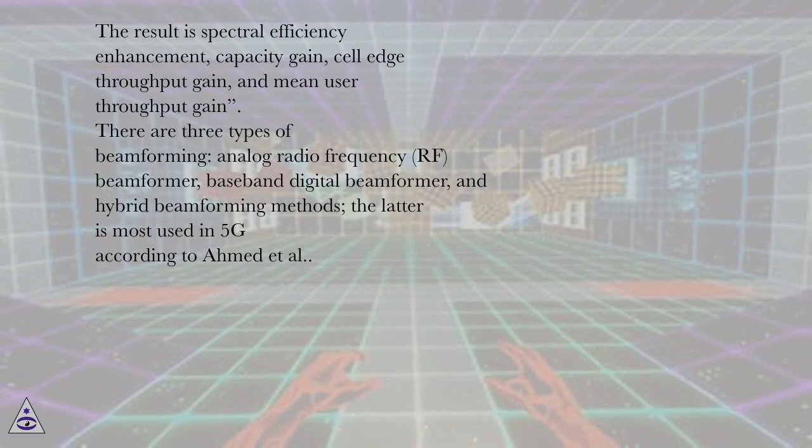There are three types of beamforming: analog radio frequency (RF) beamformer, baseband digital beamformer, and hybrid beamforming methods, the latter is most used in 5G according to Ahmed et al.